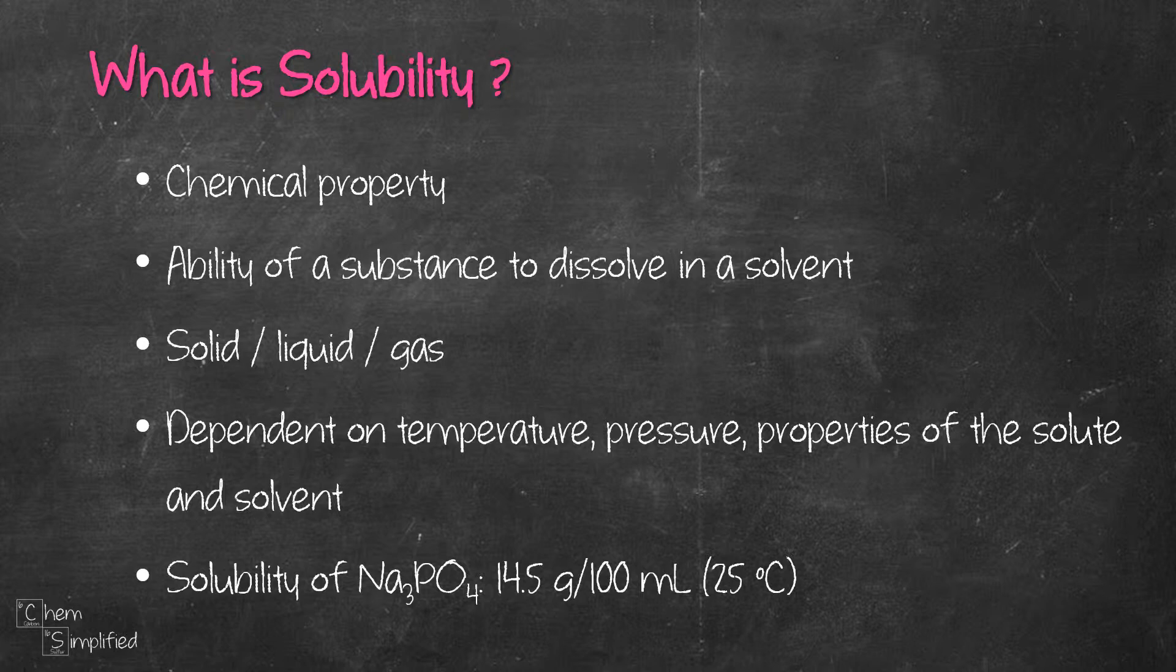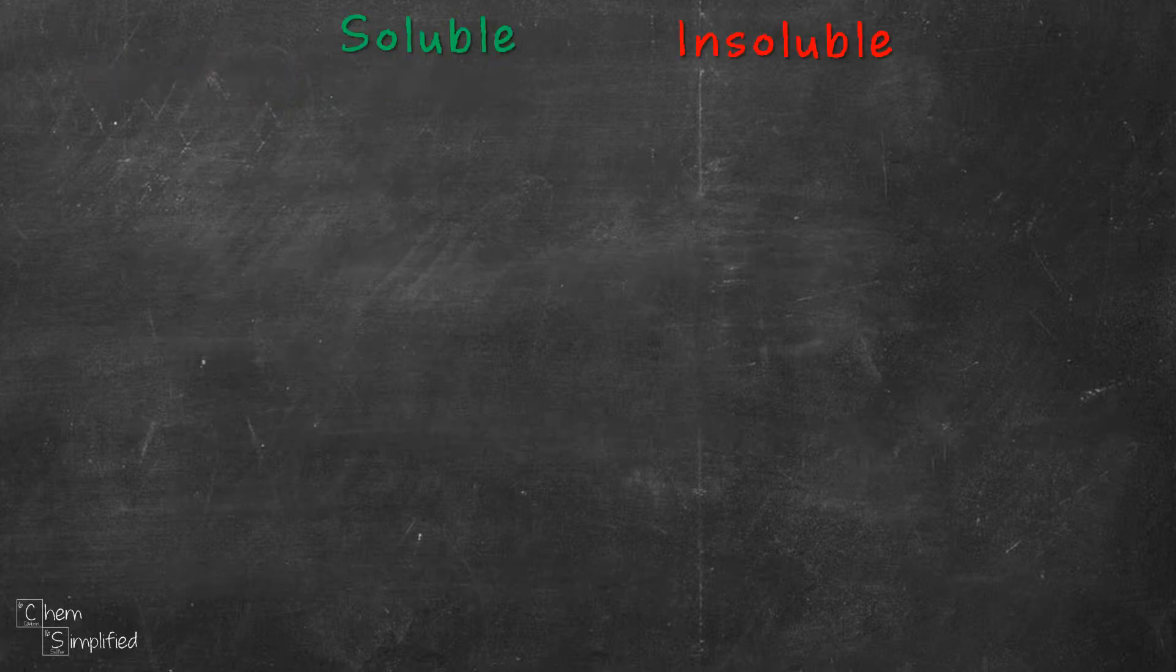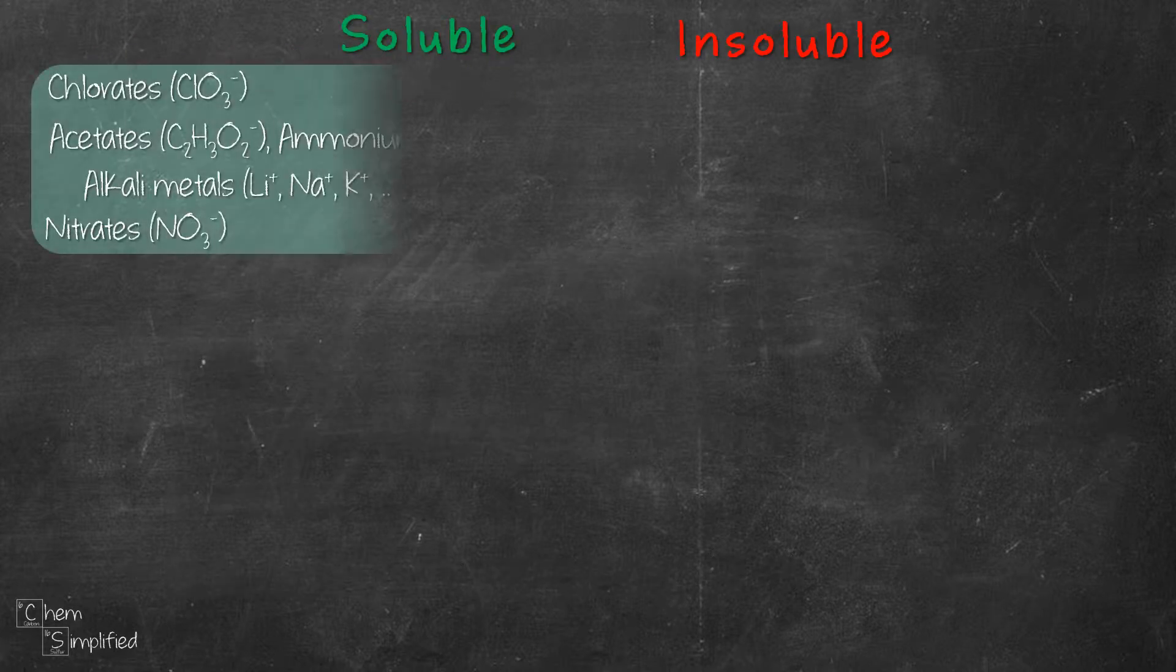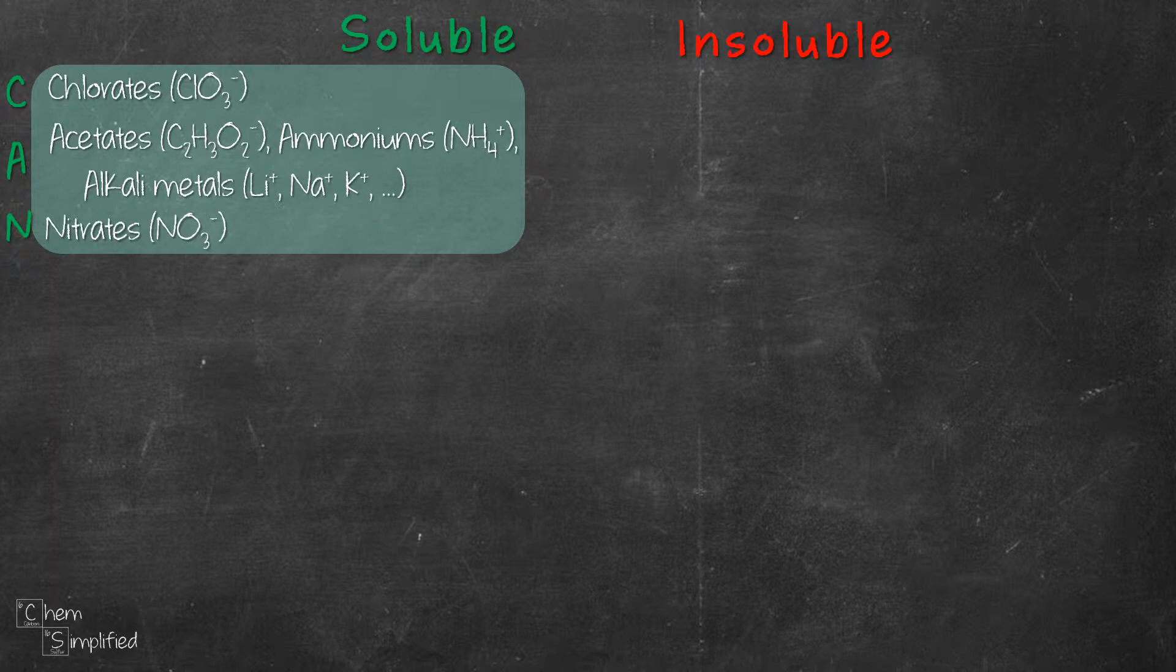Now that we're clear what solubility is, let's construct our solubility table. Chlorates, acetates, ammoniums, alkali metals, and nitrates, the C-A-N, can. Any substance with these ions can dissolve in water, making them soluble. There are no exceptions.